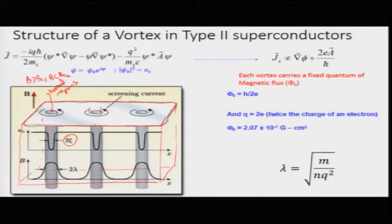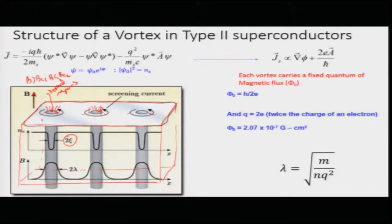Each vortex, being a normal non-diamagnetic region, has magnetic field present inside it. The magnetic field inside the vortices also leaks out into the diamagnetic regions of the superconductor over a distance of twice the penetration depth. Around each vortex there are shielding currents which circulate, and these currents also extend up to a distance given by the penetration depth.